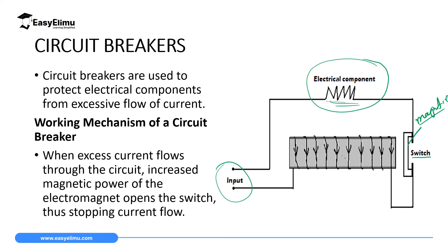When there is normal current flowing, it flows through the conductor and magnetizes the core, but that magnetism will not be enough to attract the switch. When the current goes high enough to destroy the component, the material is designed so that the core will gain enough magnetism to attract the switch. When it attracts the material making the switch, a gap remains and the circuit becomes incomplete. When the circuit becomes incomplete, the component stops working.